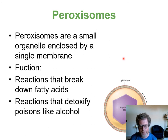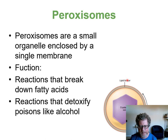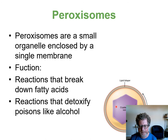Peroxisomes are a small organelle enclosed by a single membrane. We'll be doing a lab with peroxisomes later in the semester. They're involved in fatty acid metabolism — fatty acids get broken down within the peroxisome. In your liver, when we detoxify alcohol, those reactions happen in the peroxisome. They're called peroxisomes because as part of breaking things down they use hydrogen peroxide.